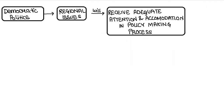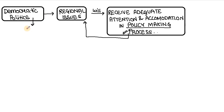Democratic politics also means that regional issues and regional problems will receive adequate attention and accommodation — that is, representation in the policy making process. If there are any regional issues or problems, they will be represented in the policy making process. Whatever policies we frame at the center, regional issues will be reflected and solved during this process. This is the meaning of democratic politics, and it is a very important aspect for GS Paper 2 answer writing and essay writing.